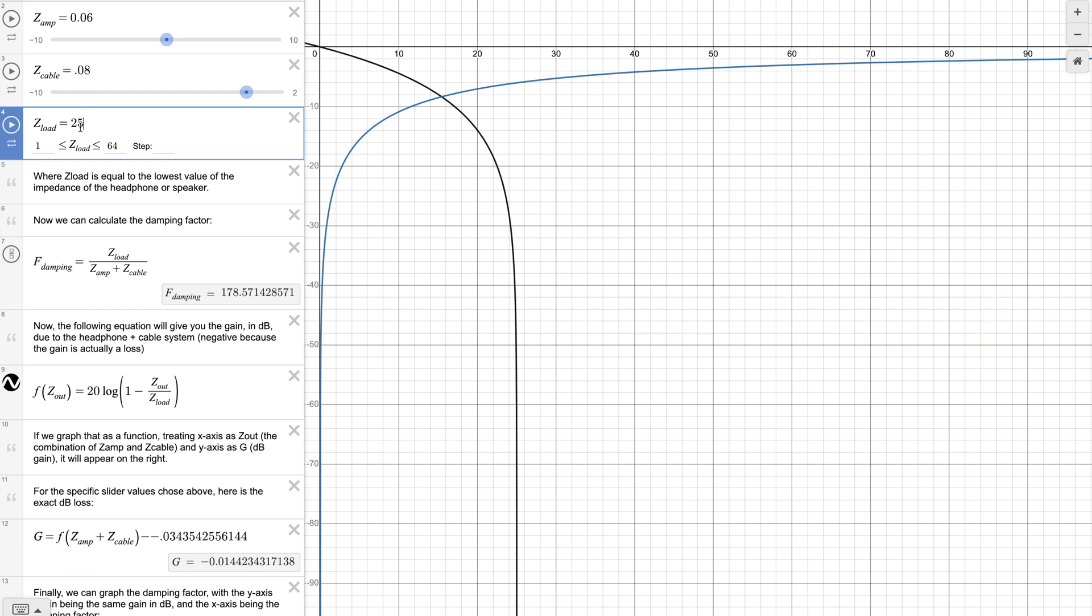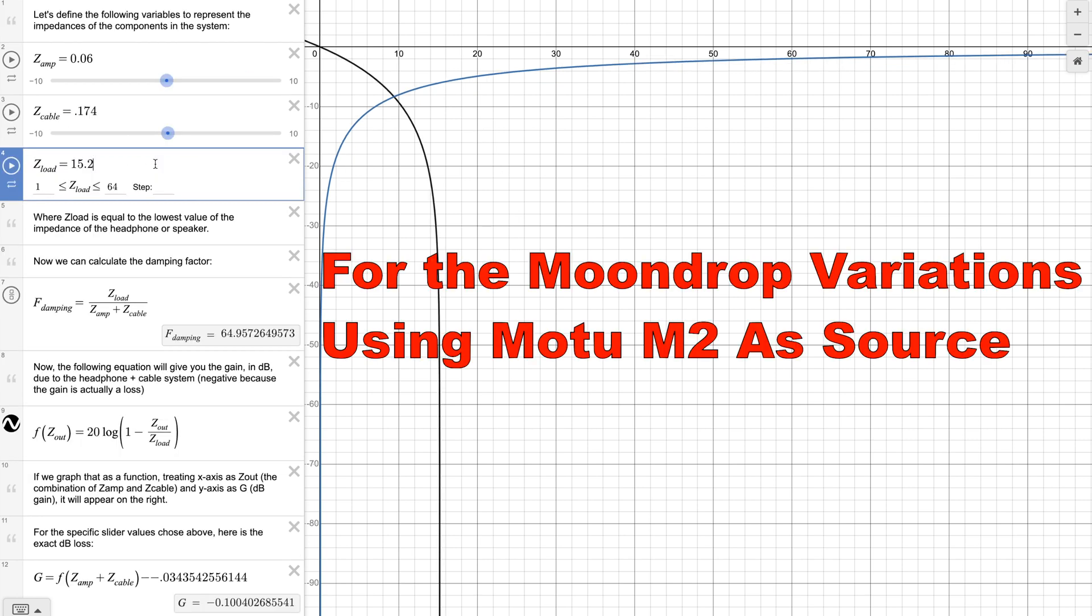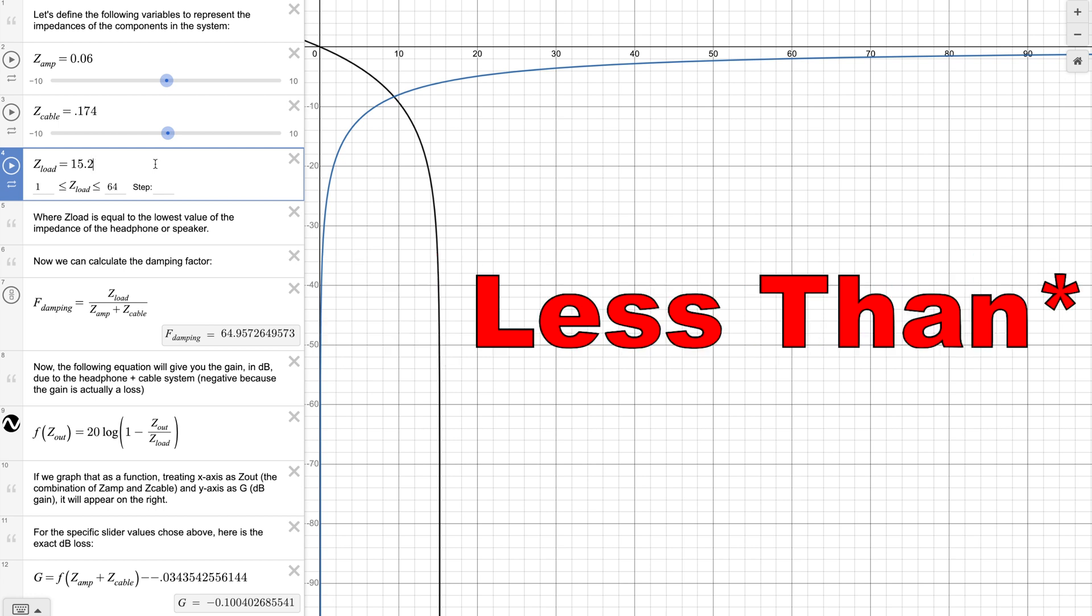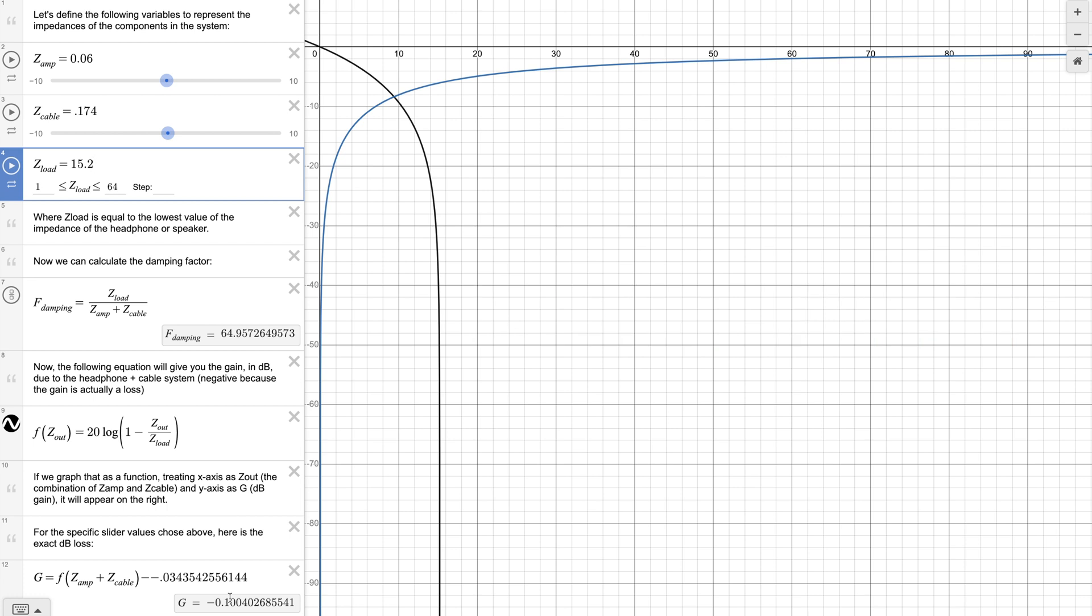There are plenty of low impedance cables on the market. For a cable to be guaranteed to make an indiscernible drop in SPL versus a theoretical zero resistance cable, it would need to be 0.174 ohms, as shown by the 0.1 dB SPL drop, which is at the absolute threshold of audibility.